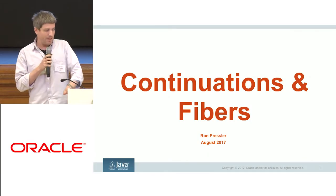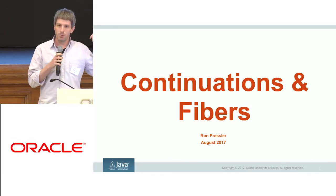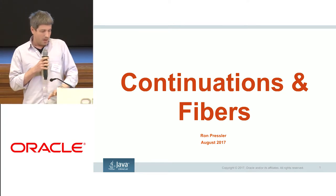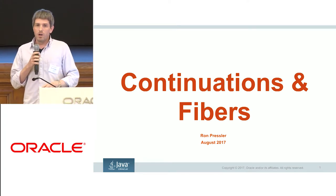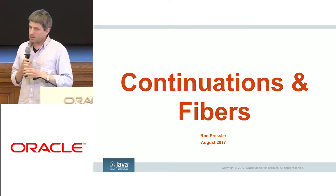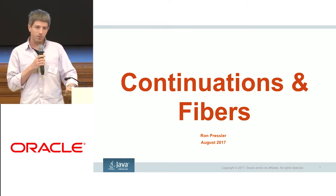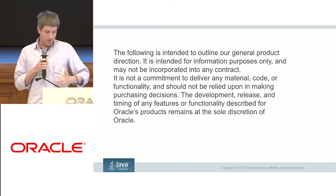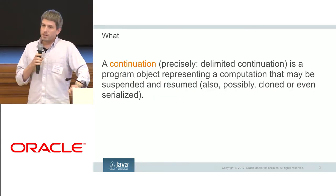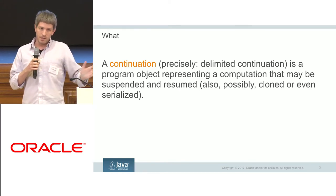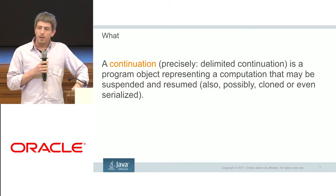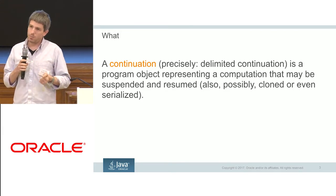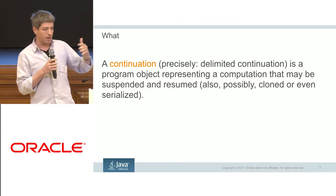I'm Ron. I talked about this already yesterday in the workshop, but I'm going to do it again with slides. We are starting work on adding continuations and fibers to the JVM. What I'm going to say is not a promise. A continuation, or more precisely a delimited continuation, is an object that represents a computation that can be suspended or paused and resumed.